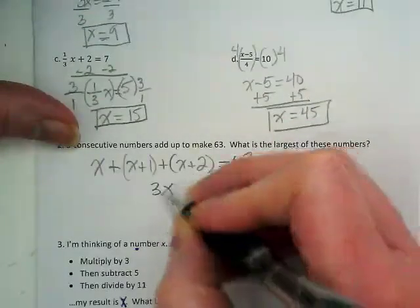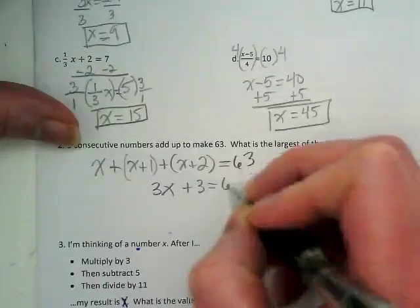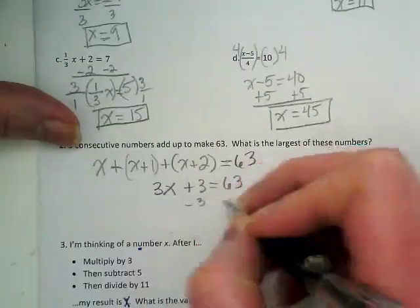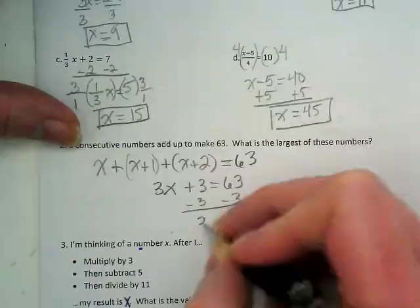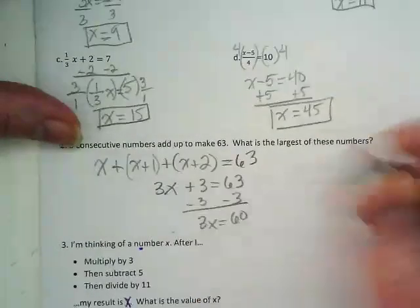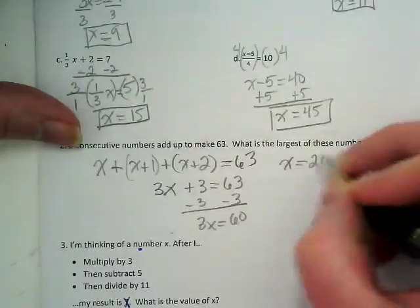So I'm going to rewrite this with combined-like terms as 3x plus 3 equals 63. I subtract 3, and I get 3x equals 60, which means x is equal to 20.